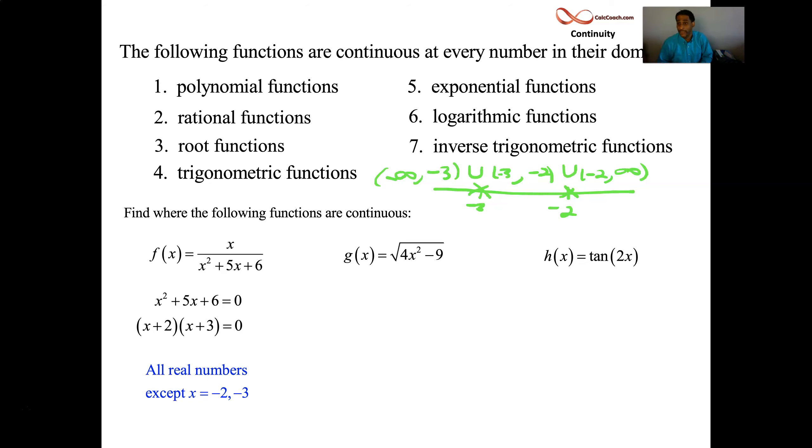Parentheses everywhere and union symbols in between. OK, all right, great. How about number 2, the second function here, g? 4x squared minus 9 underneath a radical. You know you can't take the square root of a negative number. So where would that polynomial underneath there ever be negative at?